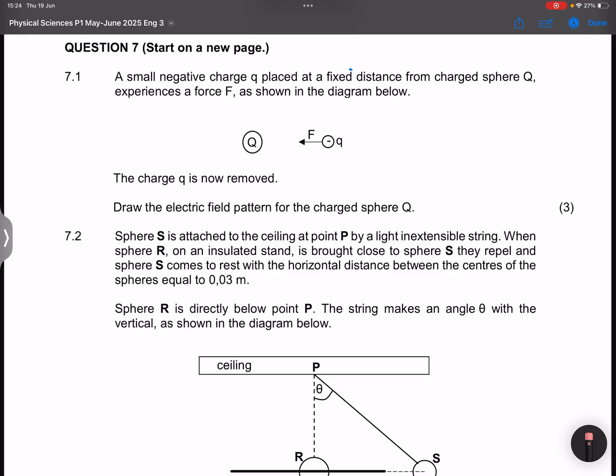They say to us we've got a small negative charge that is placed at a fixed distance from a charged sphere Q. It experiences a force F as shown in the diagram. Now in this case, if we've got a negatively charged object that experiences a force towards Q, that must be a force of attraction. So it does already tell us that Q must be positive.